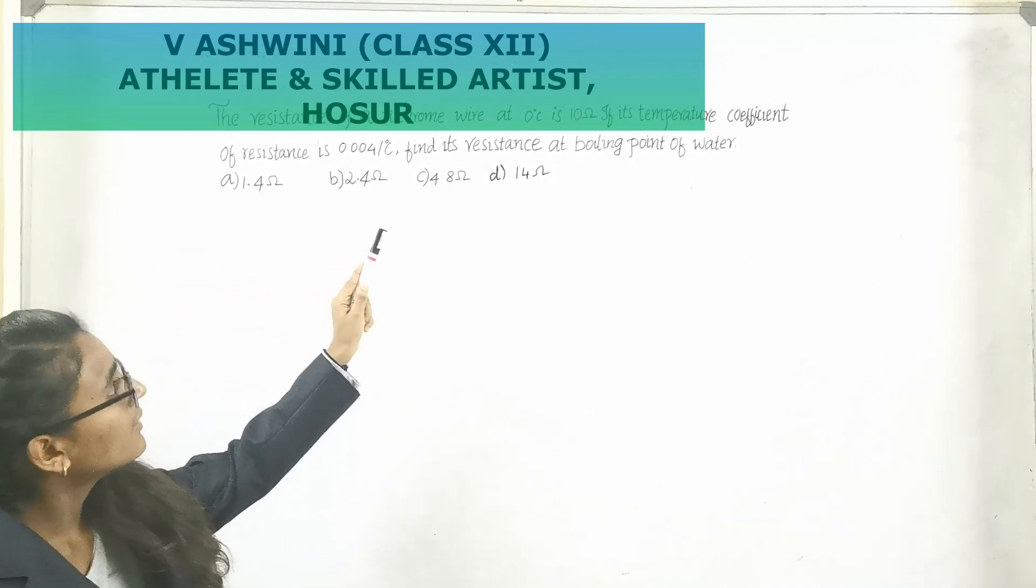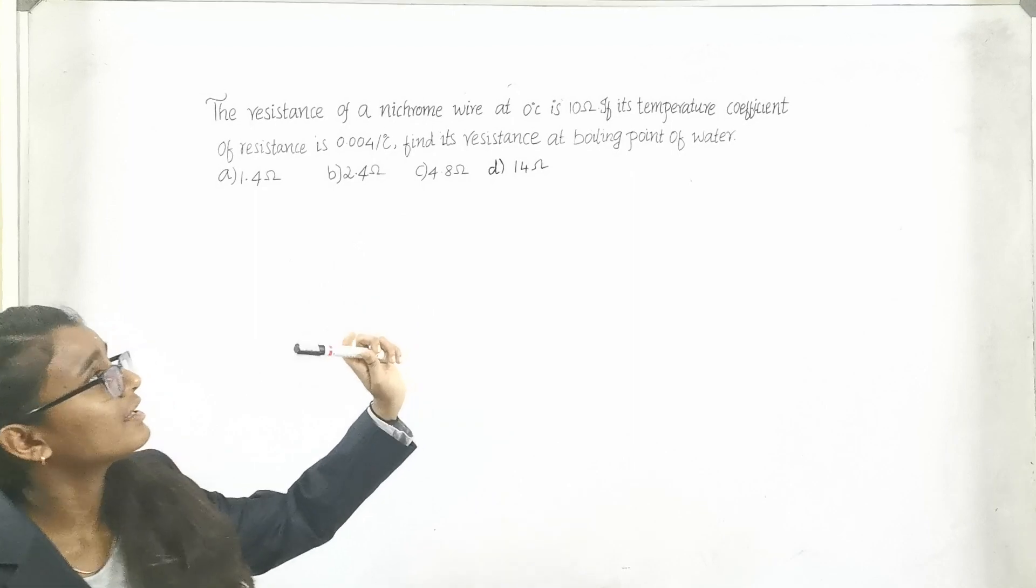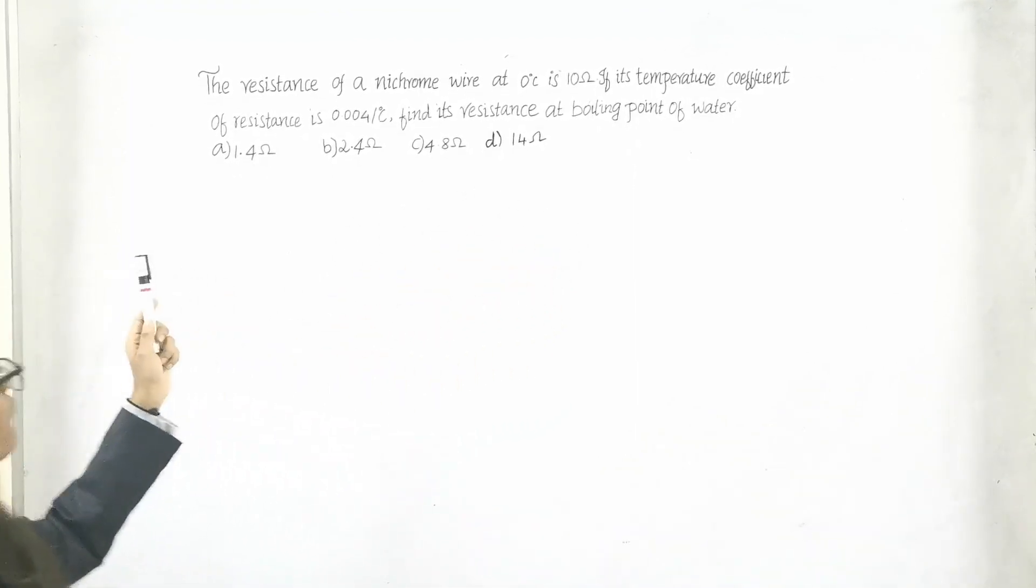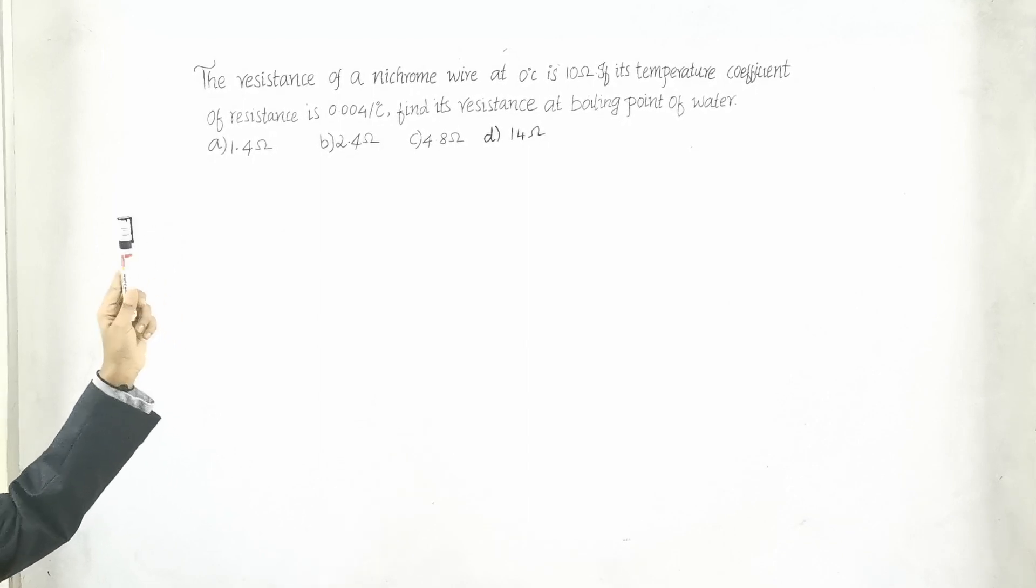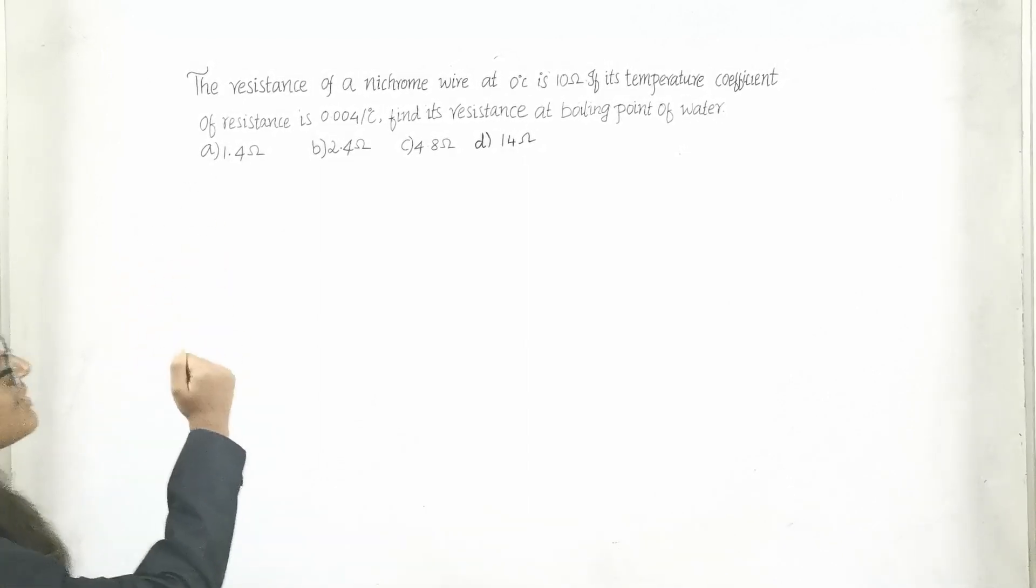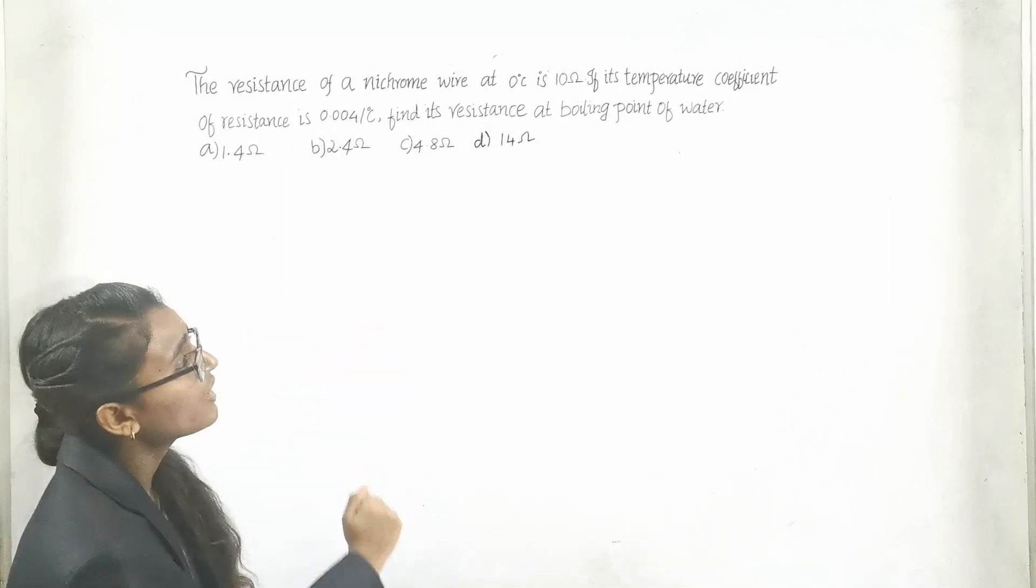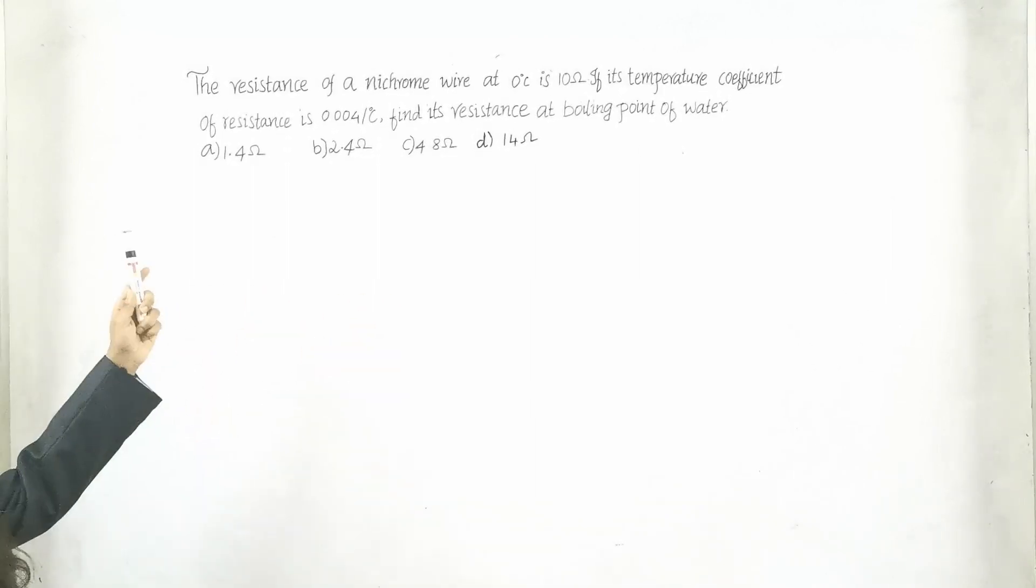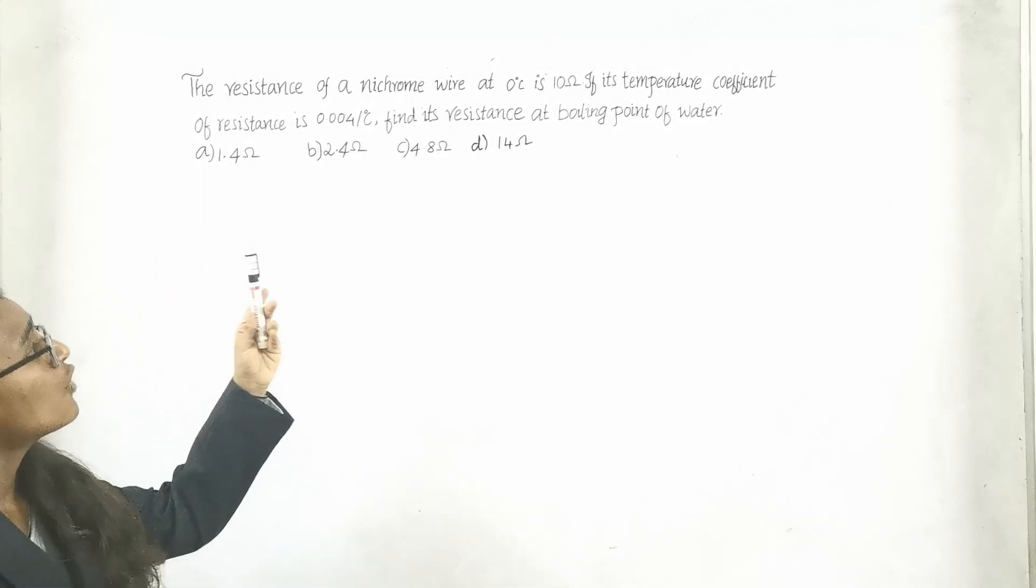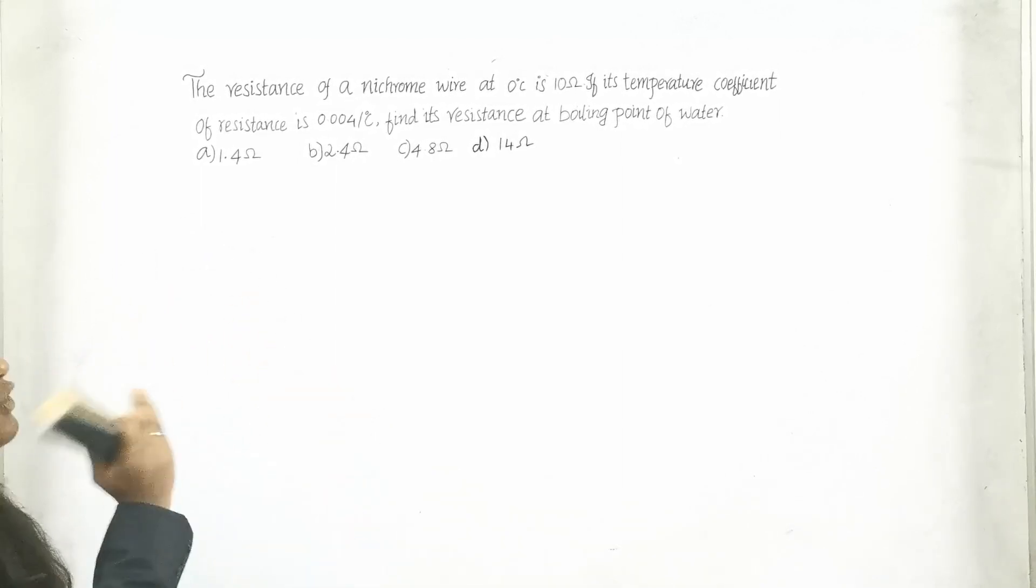The resistance of a nichrome wire at 0 degree Celsius is 10 ohms. If its temperature coefficient of resistance is 0.004 per degree Celsius, find its resistance at boiling point of water. The options are: A) 1.4 ohms, B) 2.4 ohms, C) 4.8 ohms, and D) 14 ohms.